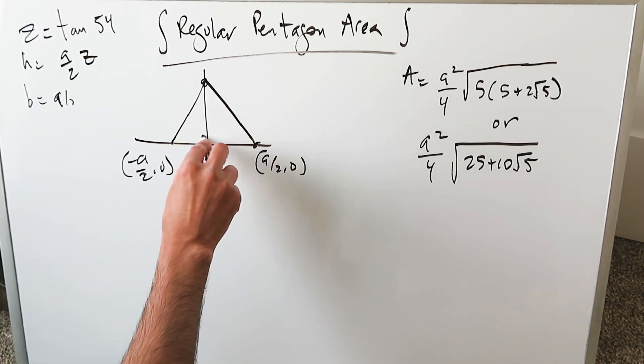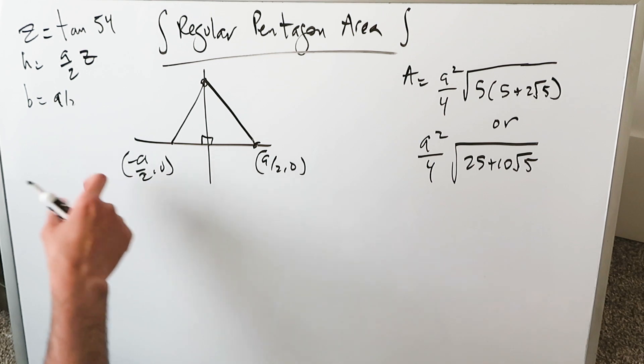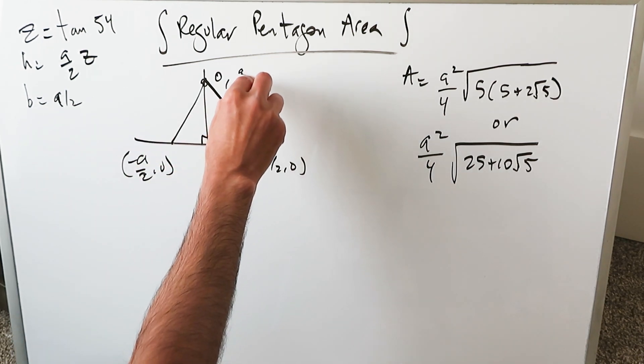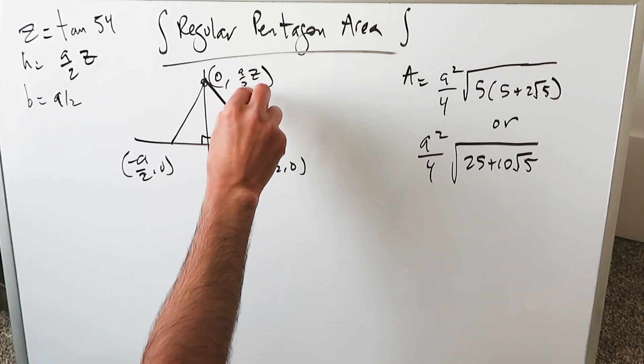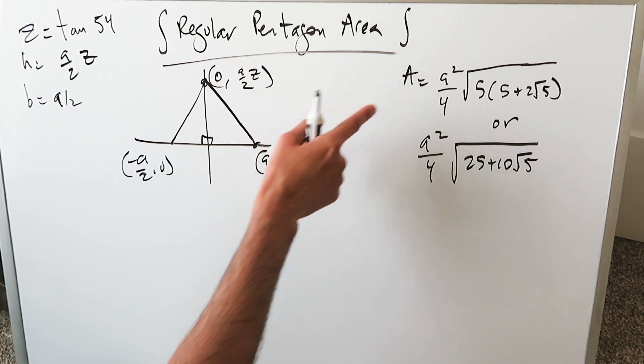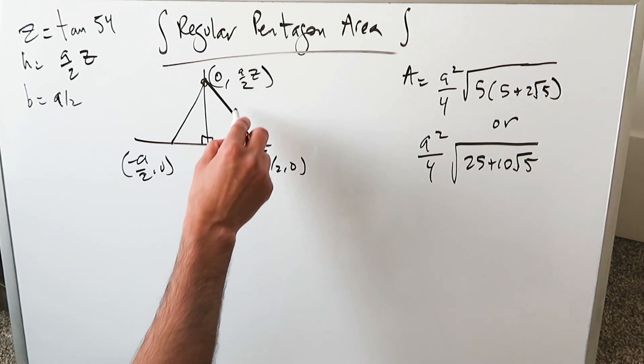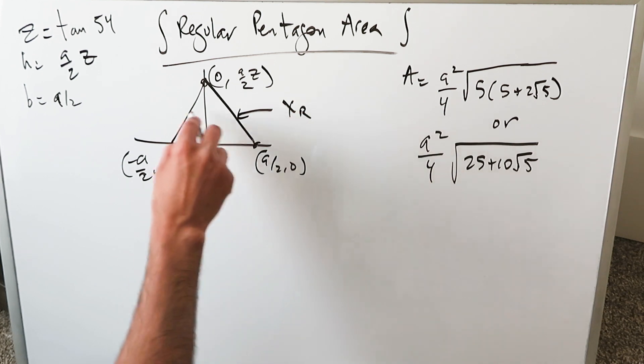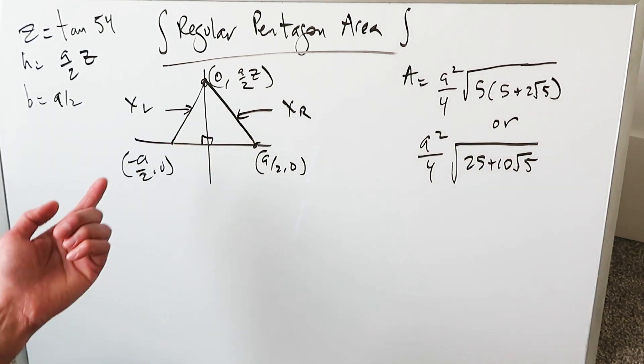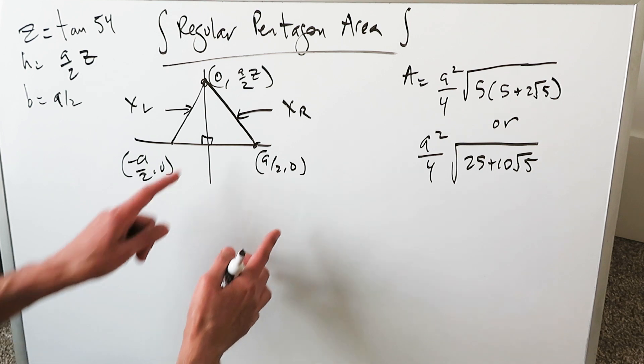But look at what I have over here. This specific point will now be 0 comma A over 2 Z. It's so much easier to bring in a Z than tan 54 all the time. You have to determine the equation of this line which is your right boundary curve. You have to determine the equation of this which is your left boundary curve.